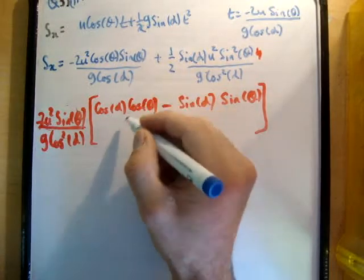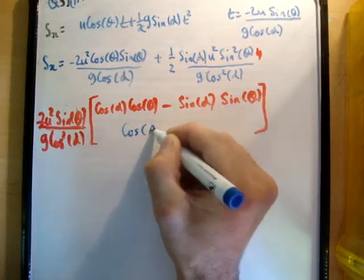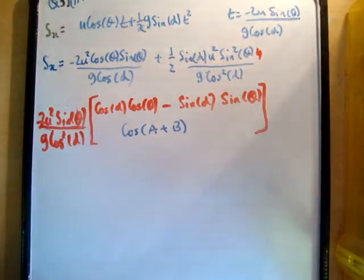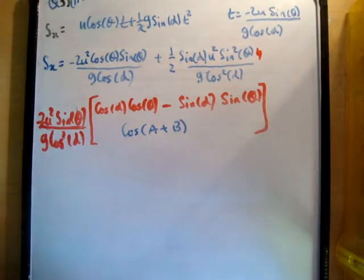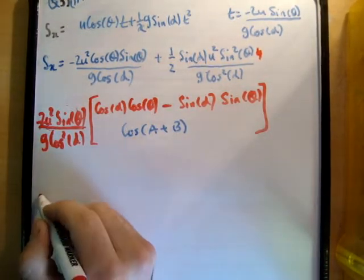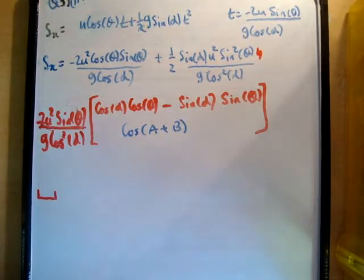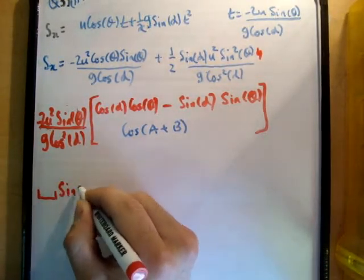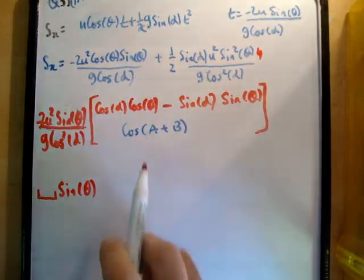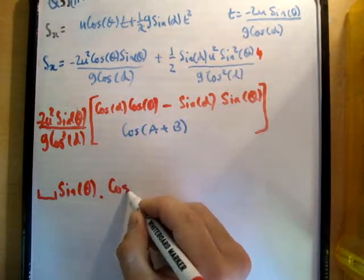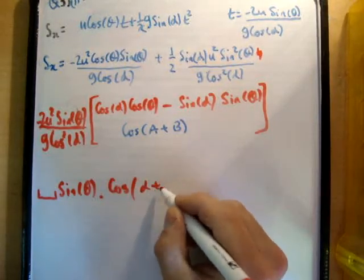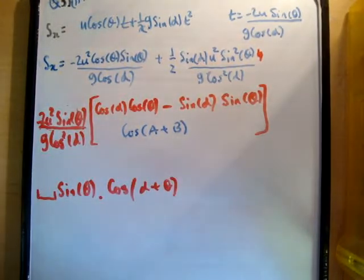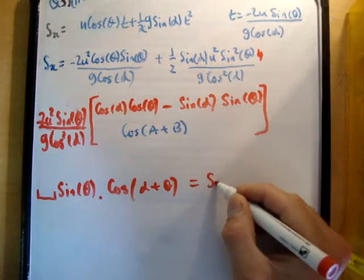This becomes cos of a plus b, so alpha plus theta. So what we're left with, now see all these constants here? I don't want to write them anymore because they're irrelevant. So I'm just going to call them that. That just tells me I have constants. And sin theta isn't a constant, so we need that still. This becomes cos of alpha plus theta.